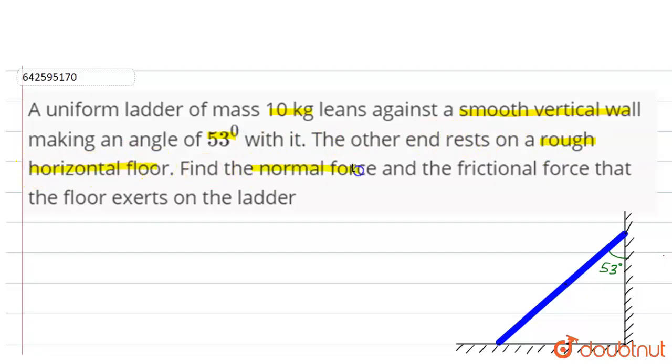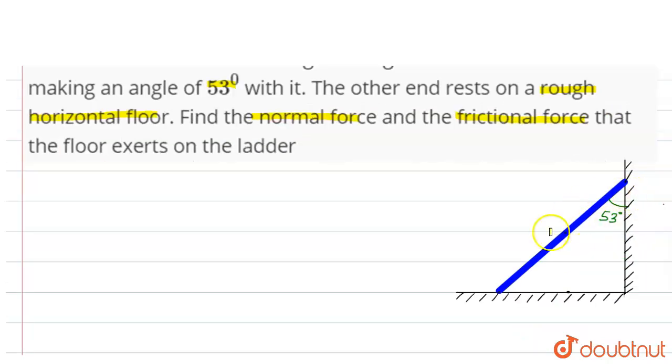Find the normal force and the frictional force that the floor exerts on the ladder. So let's say we have a ladder like this which is leaning against the wall, making an angle 53 degrees with it. This surface is smooth and this is the rough surface.